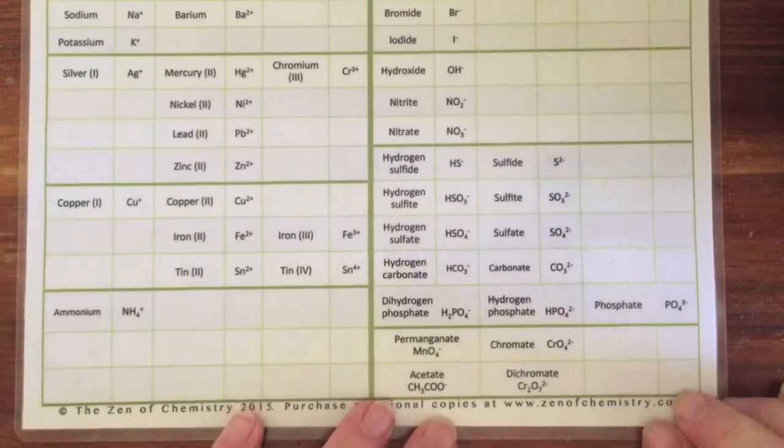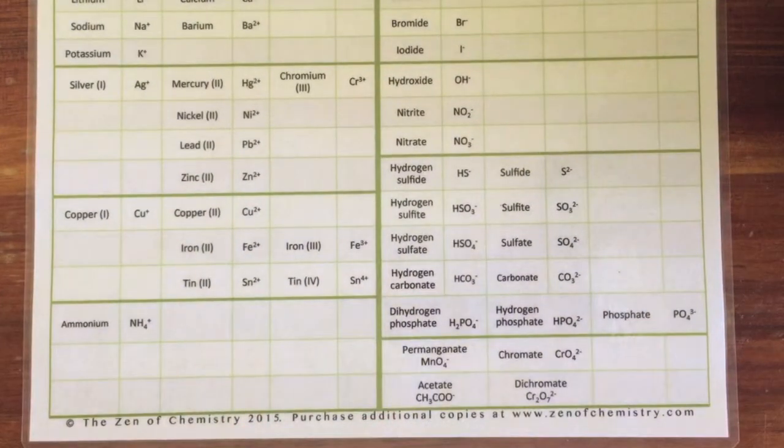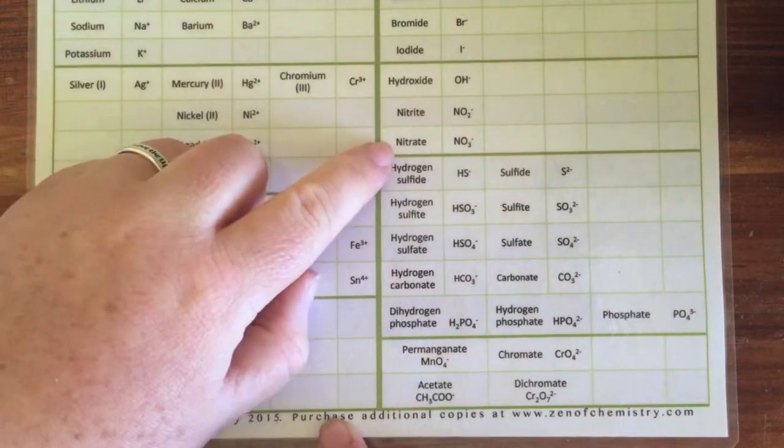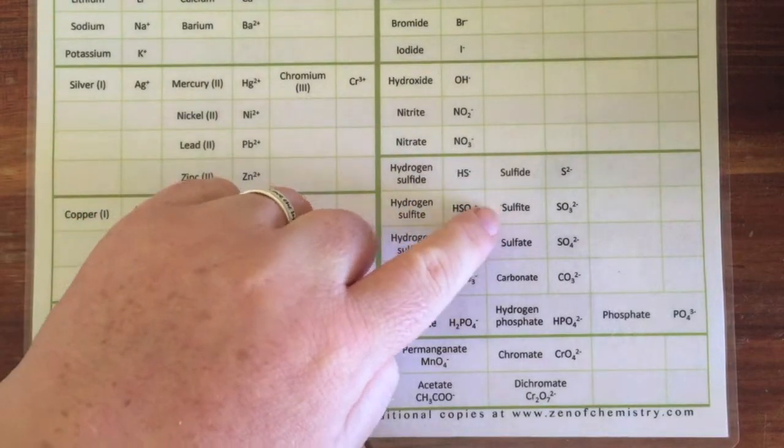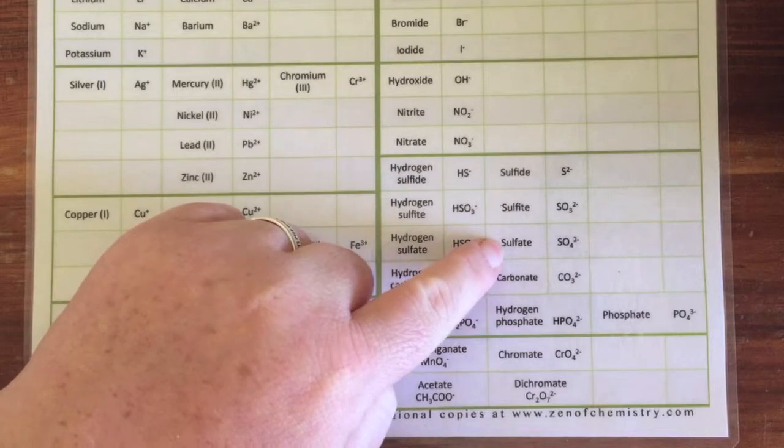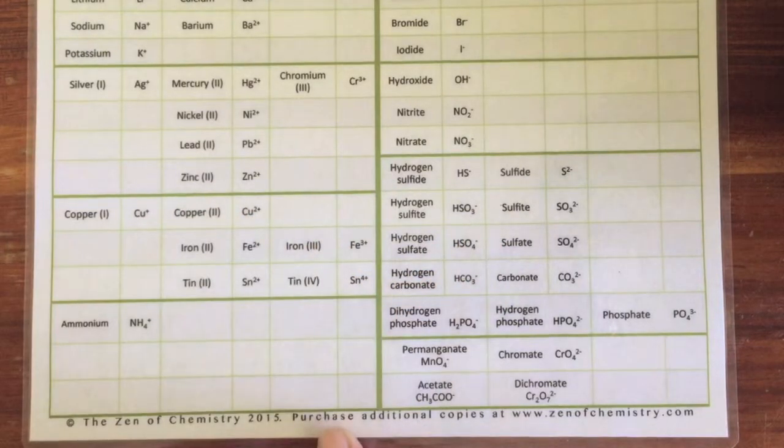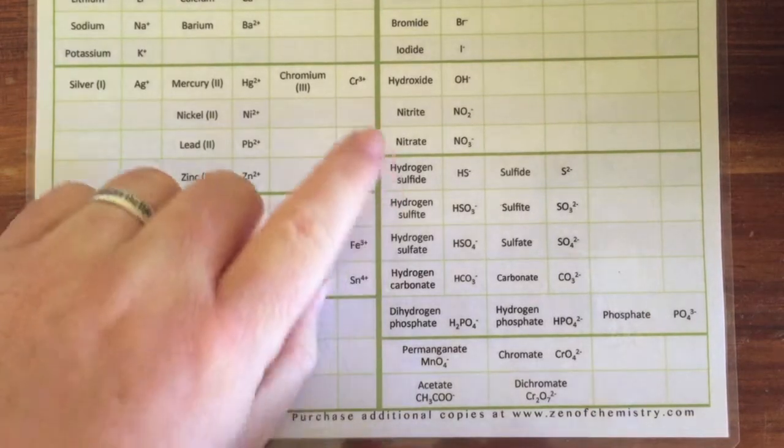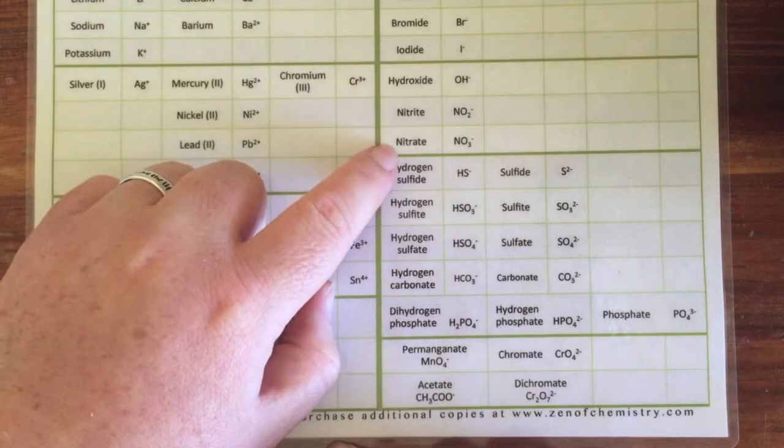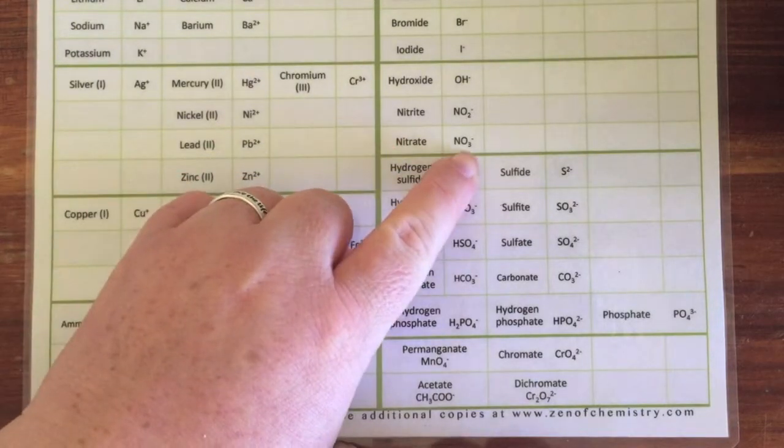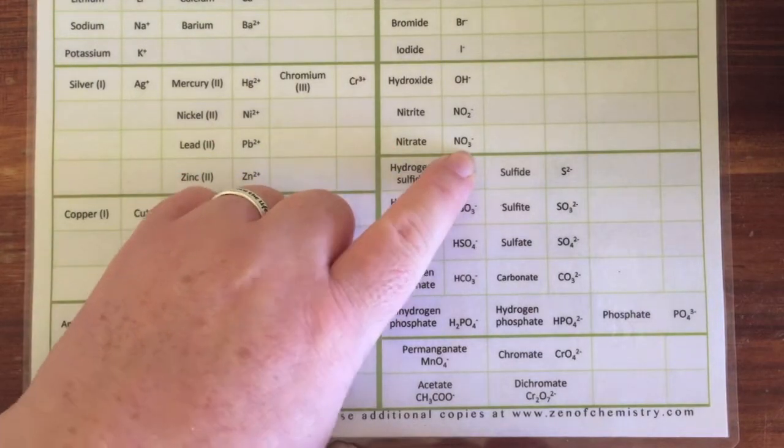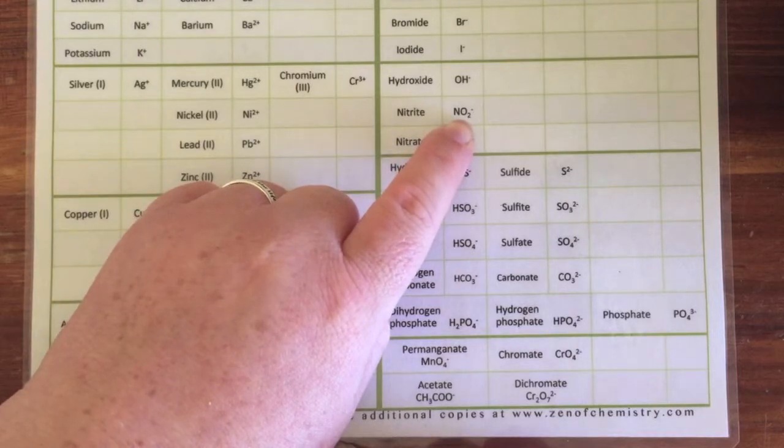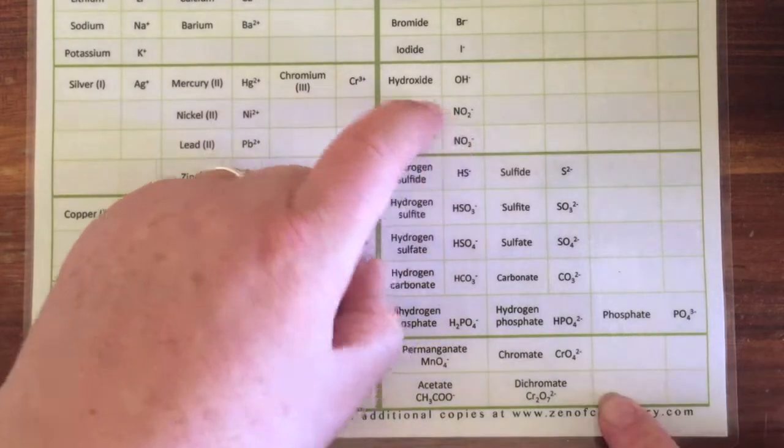When we start to get down to our -ites and our -ates - nitrite, nitrate, sulfite, sulfate - -ate, if you think about it, always has the most number of oxygens. In the case of nitrite and nitrate, nitrate has three oxygens and nitrite has one less, it's got two oxygens.